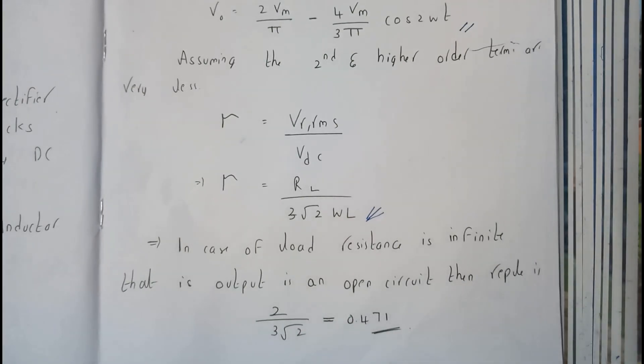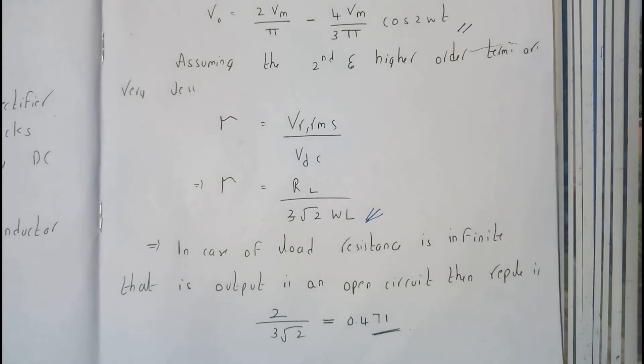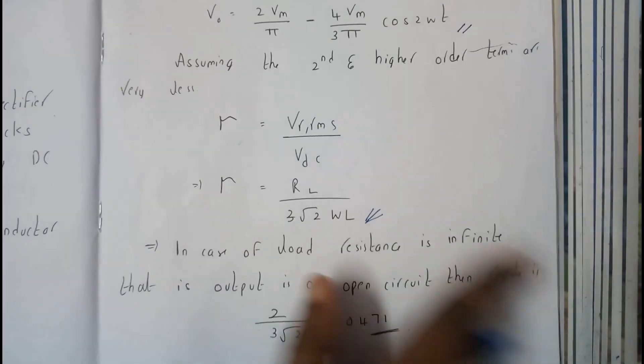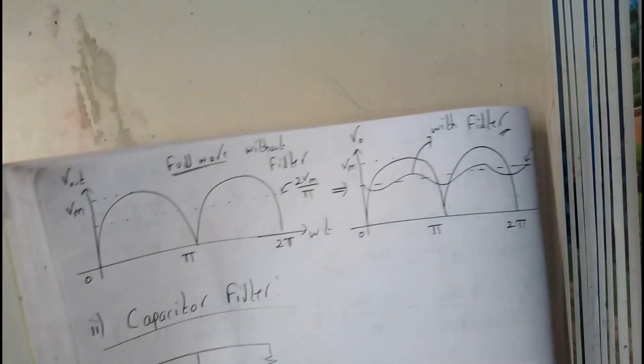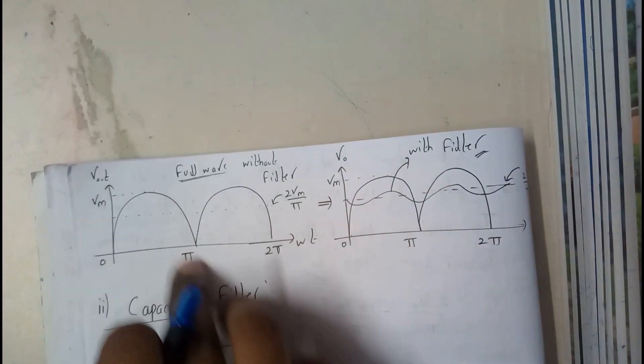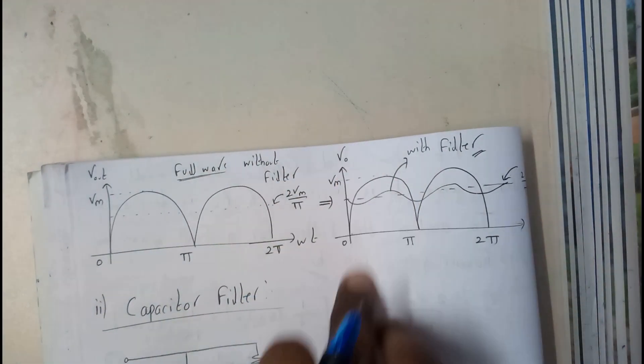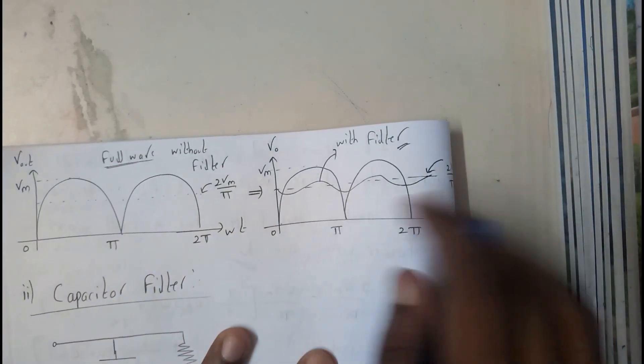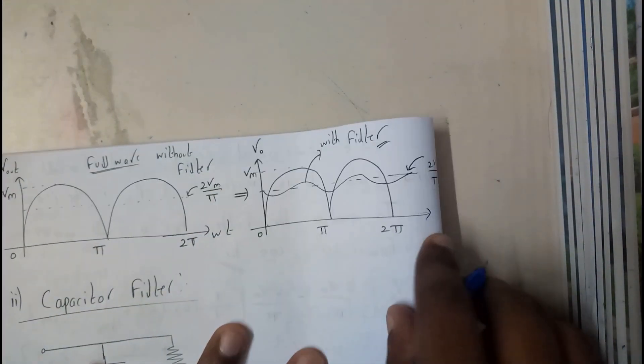The diagram clearly explains the input and output. The input is the full wave rectifier output, and the output from the filter is at some height, 2Vm by π. At that height it will be almost a DC voltage waveform.